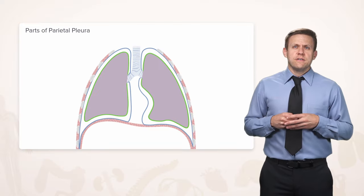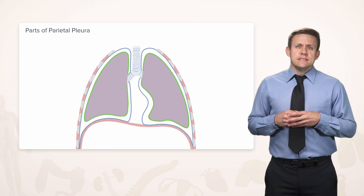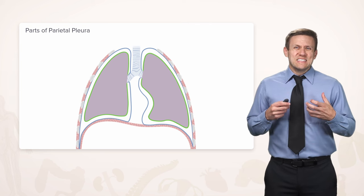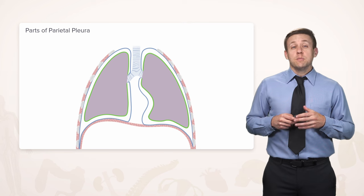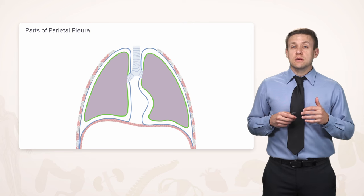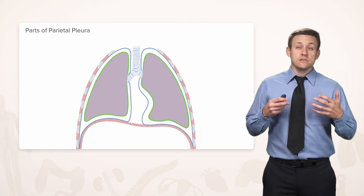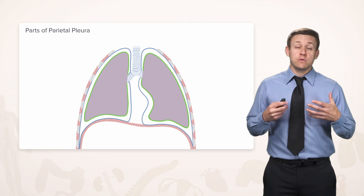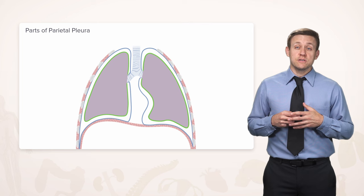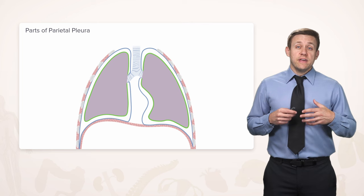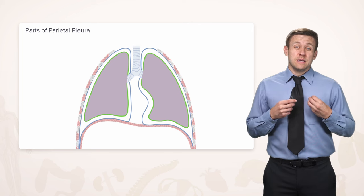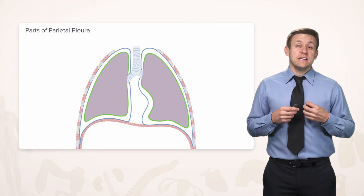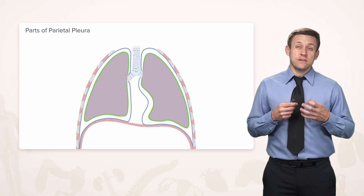The visceral pleura is largely insensitive to pain because it doesn't have the right kind of innervation. But the parietal pleura does have somatic innervation — innervation by regular spinal nerves — so it's able to produce a very sharp type of pain if there's trauma or inflammation in that area.